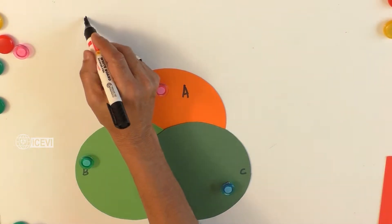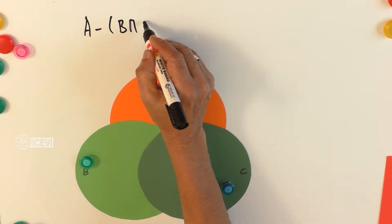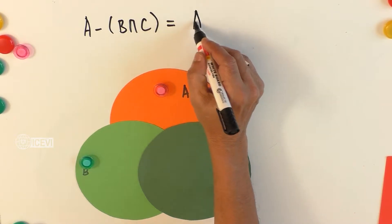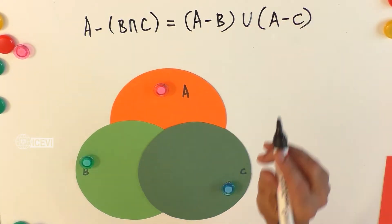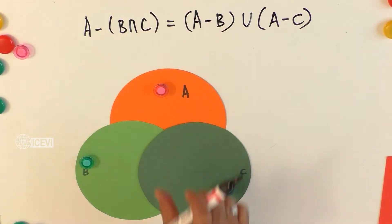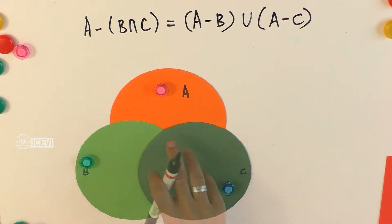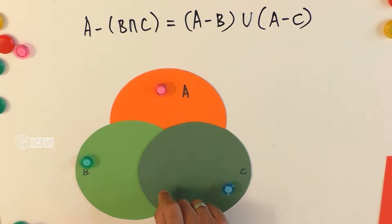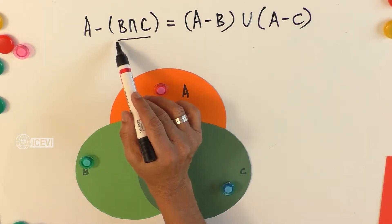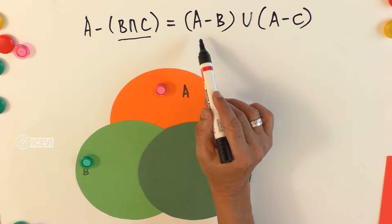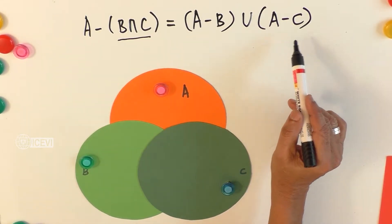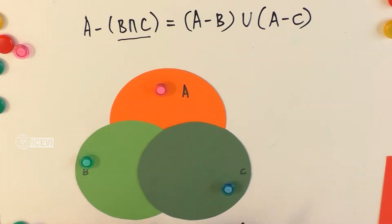In this video, let us prove A minus B intersection C equals A minus B union A minus C. We can use numbers to prove this, but at the same time, using paper cuttings to learn this is a fun as well as beautiful learning experience. We have to find out B intersection C, then A minus B intersection C, A minus B, A minus C, and finally A minus B union A minus C.